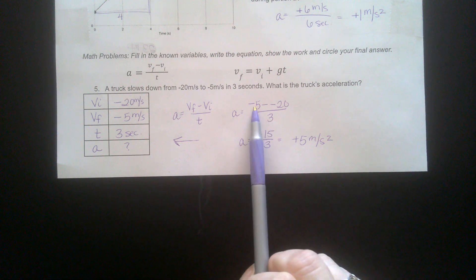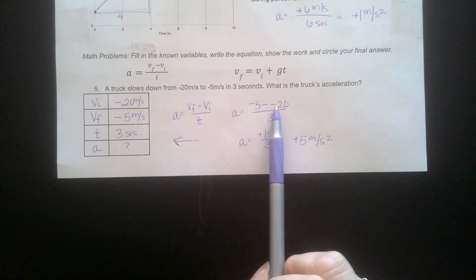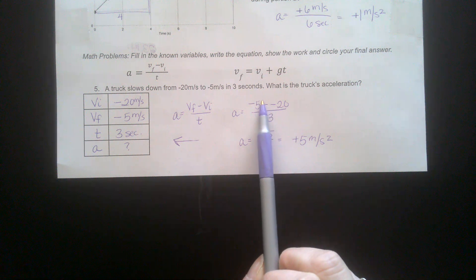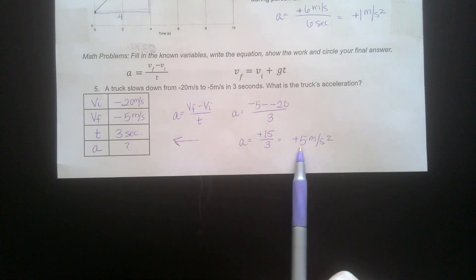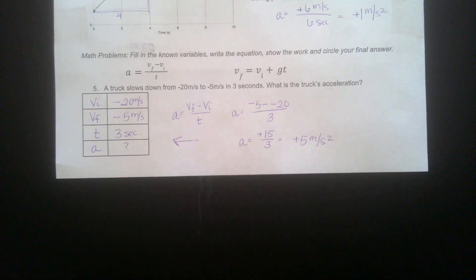You've got to be careful with the minus sign. So it's VF, which is negative 5, minus VI, which is negative 20. When you subtract a negative, you end up adding a positive. So we get 15 over three seconds is positive 5 meters per second squared.